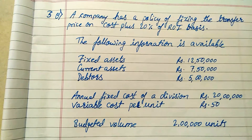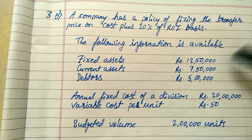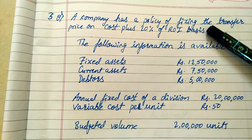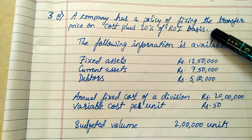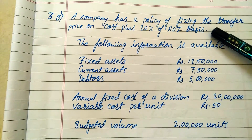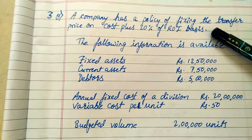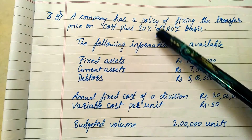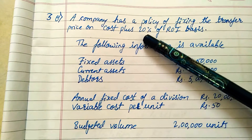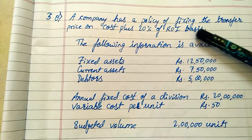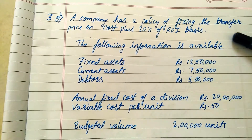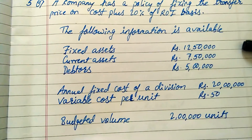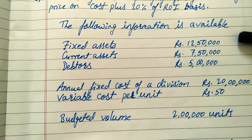Here we go with the question. A company has a policy of fixing the transfer price on a cost plus 20% of ROI basis. That means the transfer price is equal to the total cost per unit plus 20% of return on investment. The following information is available: fixed assets are ₹12,50,000.